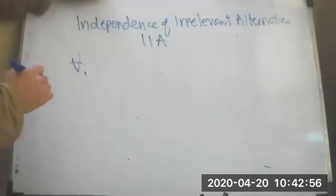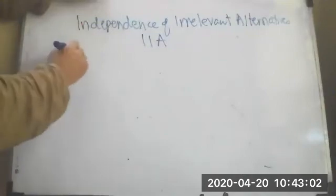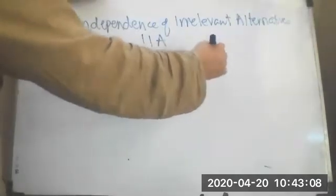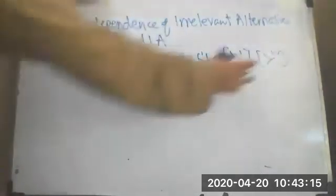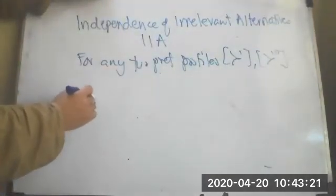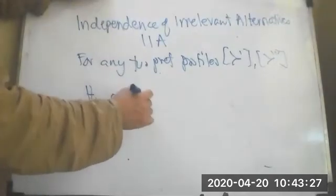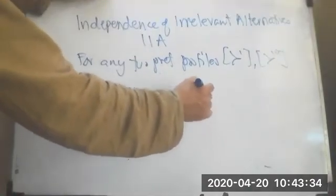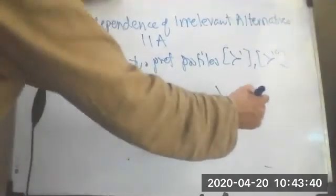for any two preference profiles, let's call them prime and prime prime, for all the agents i, if O1 is preferred by i over O2 in one profile if and only if O1 is preferred by i over O2 in the other preference profile, then it must be the case that whatever social welfare function you apply, O1 should be above O2 in that welfare function for this preference profile.